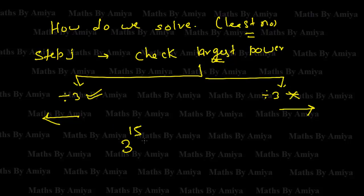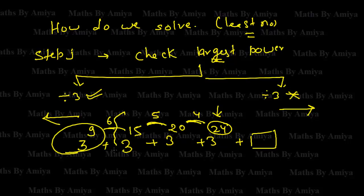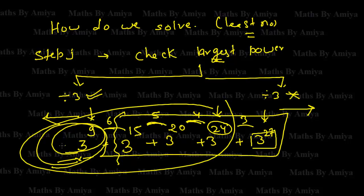Check with example: 3^15 + 3^20 + 3^24. Which number should we add to make a perfect cube? The largest power is 24, which is divisible by 3, so we work backward. The gaps are 5 and 4, so the next gap going backward is 6. That gives us 3^9, since the gap between 9 and 15 is 6. This is the least number. We could work forward too — the next gap would be 3, giving 3^27, but 3^9 is the least number.